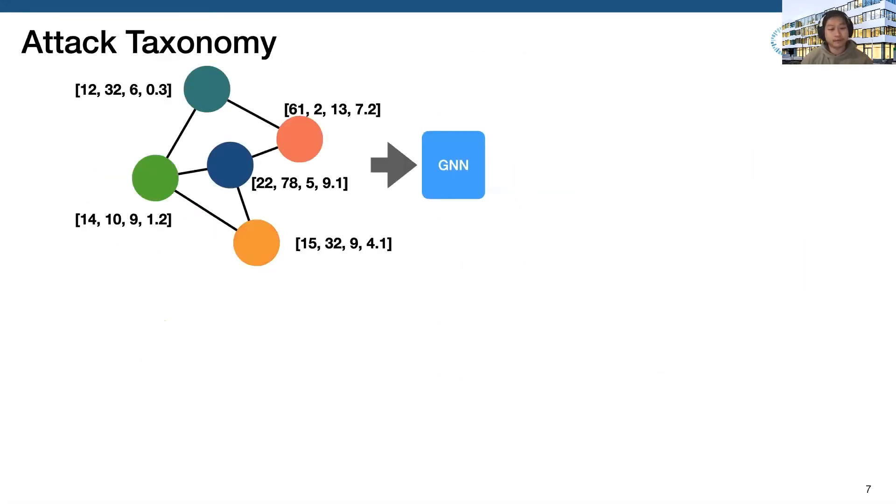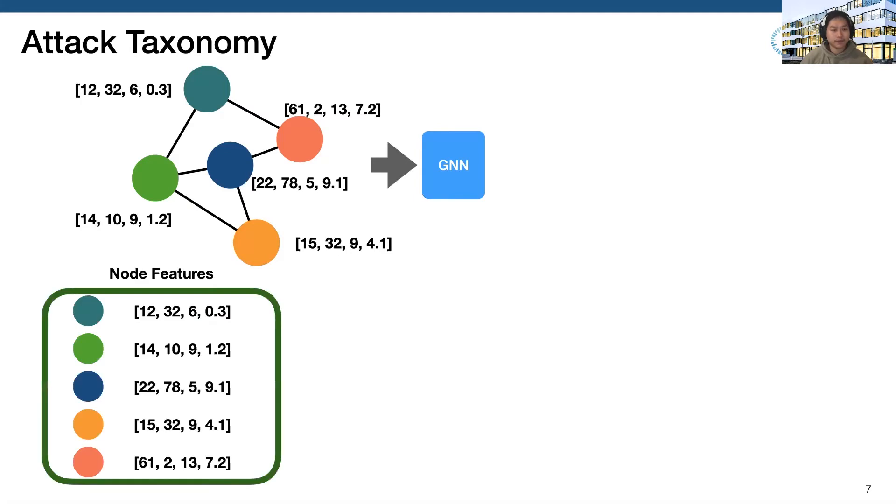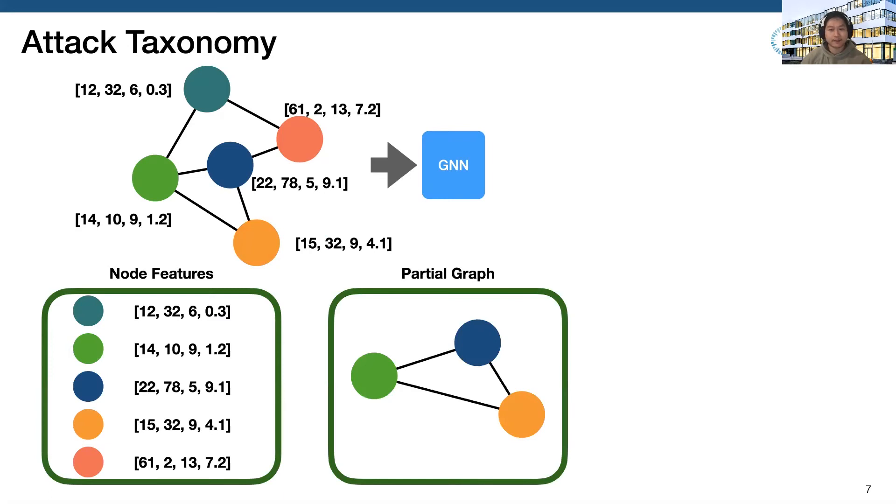Now let's talk about our threat model. Here, we consider three types of threat model. We can assume that the attacker knows all node features or not. Also, since we are inferring the relationship between the blue nodes and red nodes, for example, we can also assume the attacker knows some other existing links, which we call the partial graph. Again, the attacker can have it or not. For the third setting, we have a shadow dataset. That is also a graph dataset with node connection and feature information. The shadow dataset can come from different distributions from the target dataset.